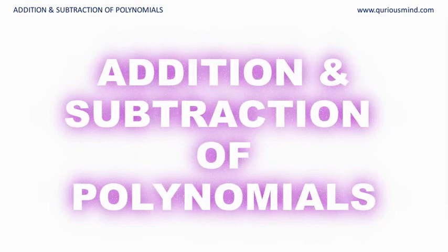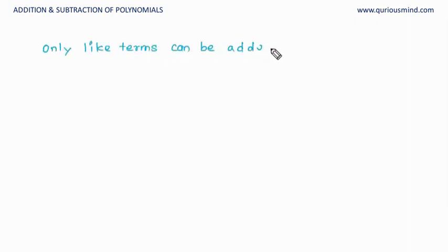Hello everyone. In this video we will have a look at addition and subtraction of polynomials. When I was covering like terms and unlike terms, I had said that the like terms and unlike terms concept is useful when we do addition or subtraction. The reason is only like terms can be added or subtracted — similarly to fractions, where only like fractions could be added or subtracted.